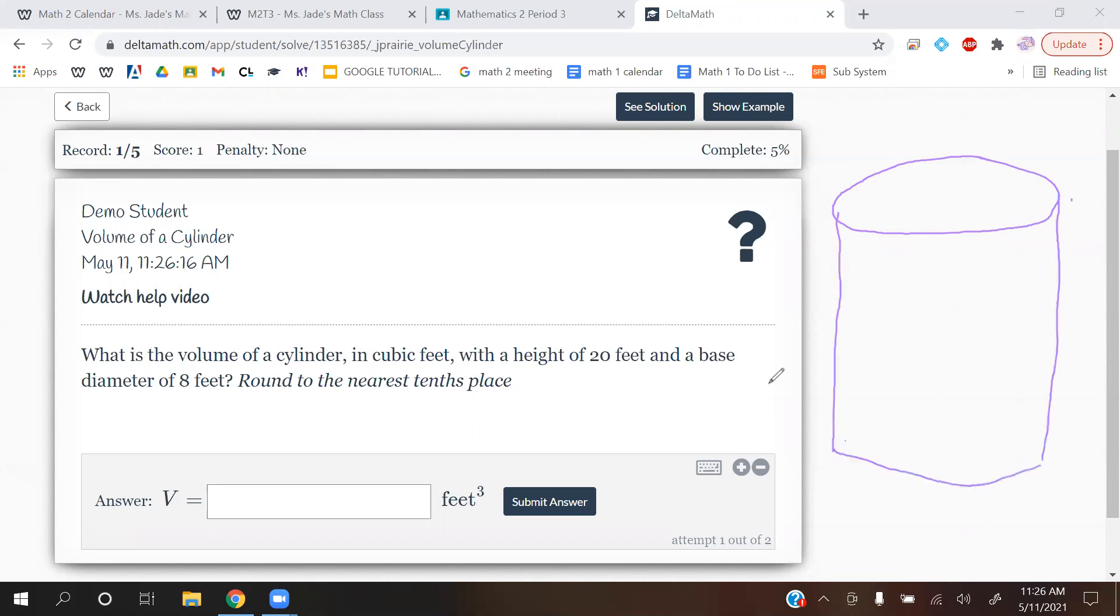So let me draw out our cylinder. This is a cylinder, it's like a can shape. Okay, so it just looks like this. And then let me write out the volume formula for a cylinder: volume is equal to π r squared h.